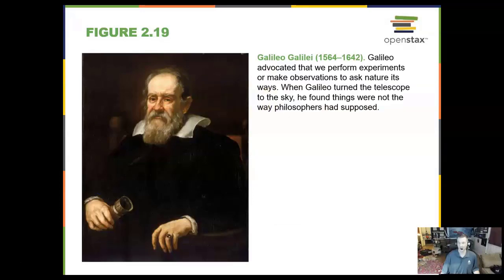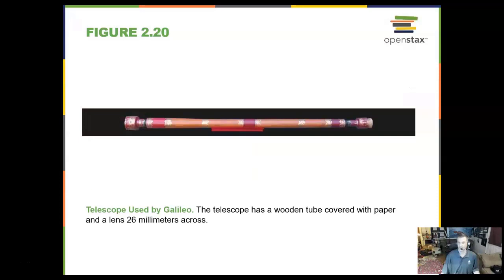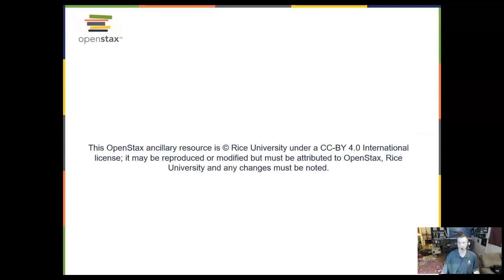Now, Galileo Galilei, known by his first name Galileo, came up to do experiments with telescopes and observations of the sky with a telescope. He was the first one to do it. Now, Galileo did not invent the telescope. It was invented by Italian lens makers. But Galileo was able to use it for the first time to look at the night sky. And so, here is what his telescope looked like. It was a wooden tube covered with paper and had a lens 26 millimeters across. That's about an inch.